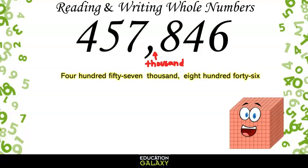To write it in expanded form, we write what each digit is worth. The 4 in the hundred thousands place is 400,000. Plus the 5 in the ten thousands place would represent 50,000. Plus the 7 in the thousands place is 7,000. The 8 in the hundreds place is 800. Plus the 4 in the tens place is 40. And the 6 in the ones place, so 6.